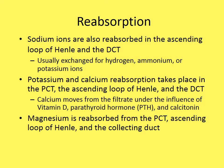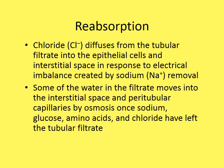Magnesium is reabsorbed from the proximal convoluted tubule, ascending loop of Henle, and collecting duct. Chloride diffuses from the tubular filtrate into epithelial cells in response to the electrical imbalance created by sodium removal. Water then moves into the interstitial space and peritubular capillaries by osmosis, once sodium, glucose, amino acids, and chloride have left the tubular filtrate.